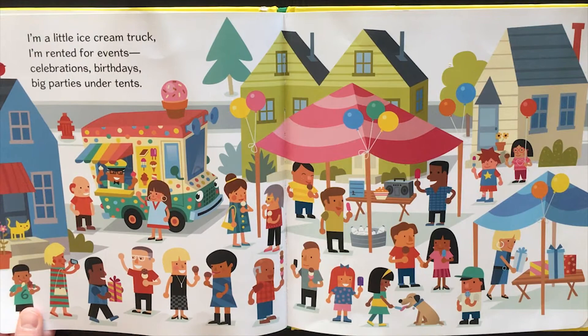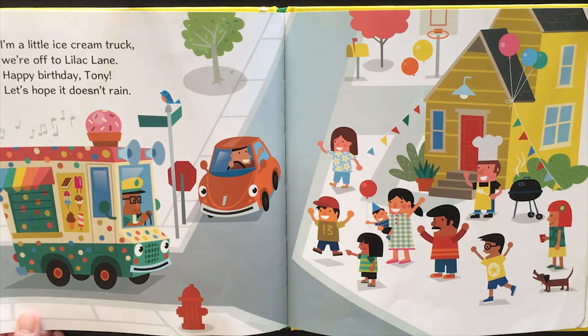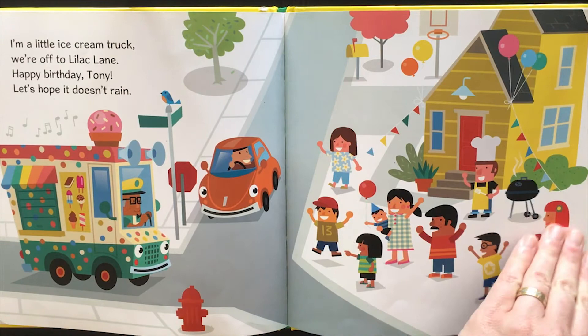I'm a little ice cream truck. I'm rented for events. Celebrations. Birthdays. Big parties under tents. I'm a little ice cream truck. We're off to Lilac Lane. Happy birthday, Tony. Let's hope it doesn't rain.